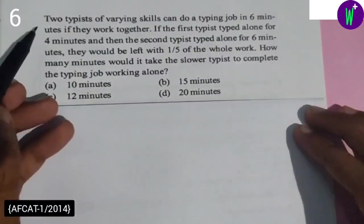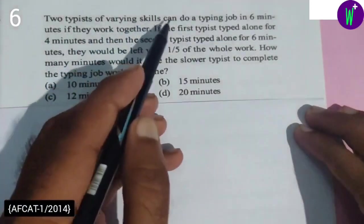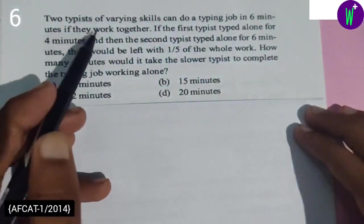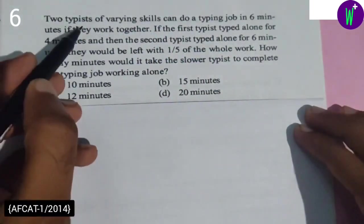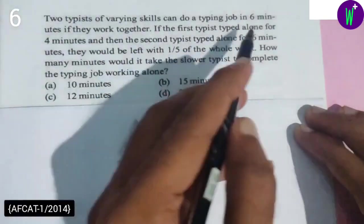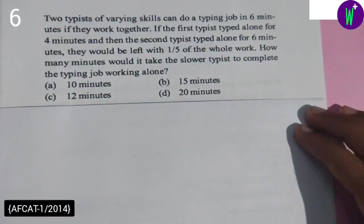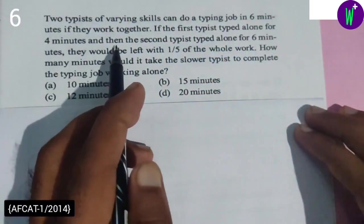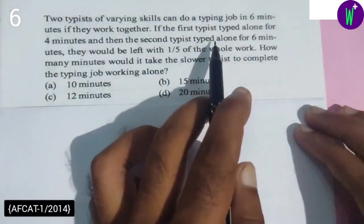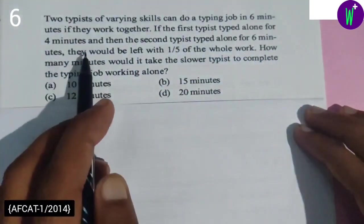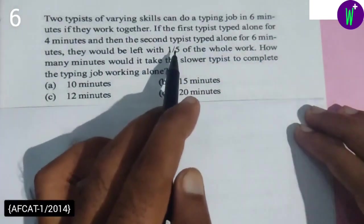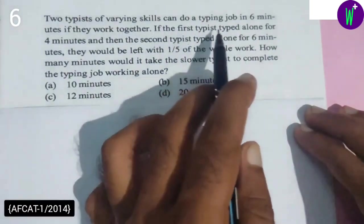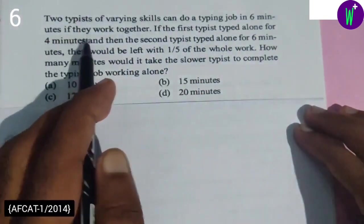Next question: Two typists of varying skills can do a typing job in six minutes if they work together. If the first typist typed alone for four minutes and then the second typist typed alone for six minutes, they would be left with one-fifth of the whole work.